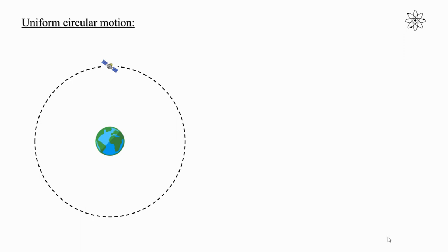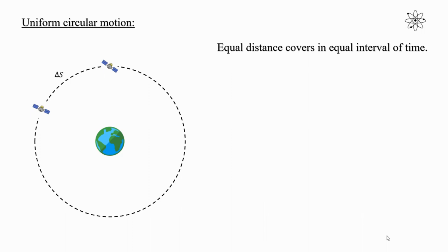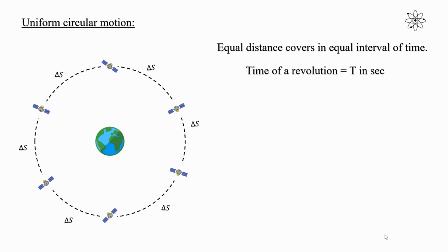In a Uniform Circular Motion, the object covers equal distance in equal interval of time. Therefore, the satellite covers distance delta s in equal interval of time. Let the time of revolution be equal to t seconds. Therefore, in a periodic time t, the satellite covers a distance equal to the circumference of the orbit. Therefore, distance covered by the satellite is equal to 2πr. From this, we can write the speed of the satellite: v is equal to 2πr divided by t.